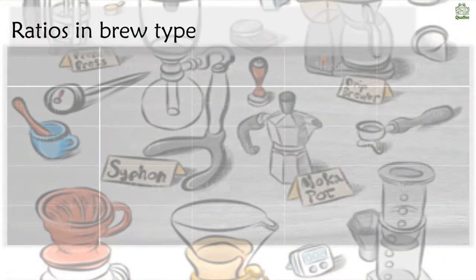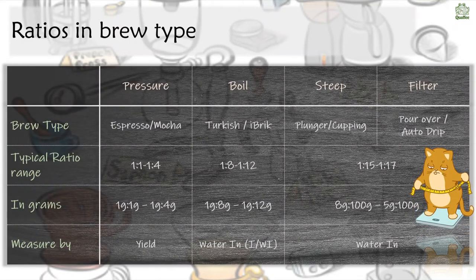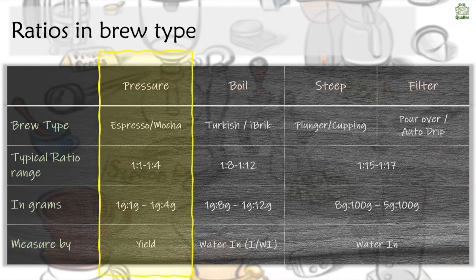Each brew type, as I said, will have its own particular default ratio. The ratios change a lot depending on the coffee, the roast, the water, etc. So it's important for you to understand the concept, but not necessarily important for you to use what people provide. It is useful having a ratio as a starting point, however it's not something that you need to see as cast in stone. So let's go through the four types of brews that I've broken things into.